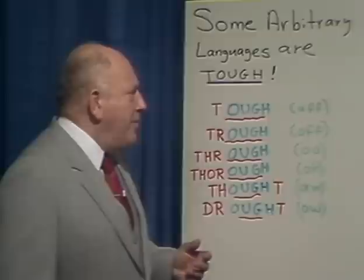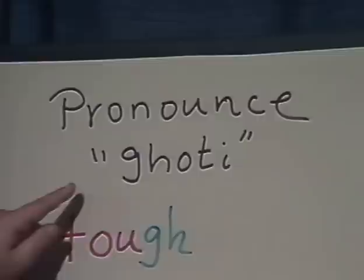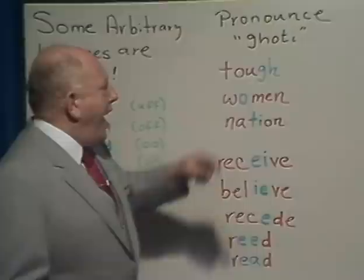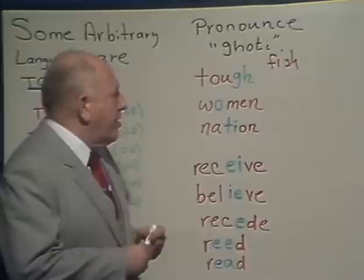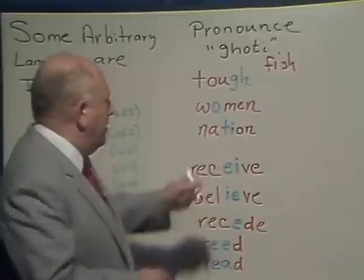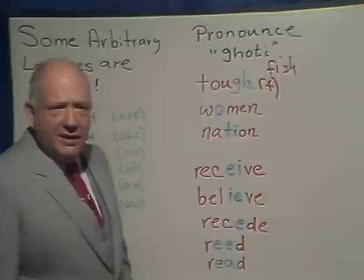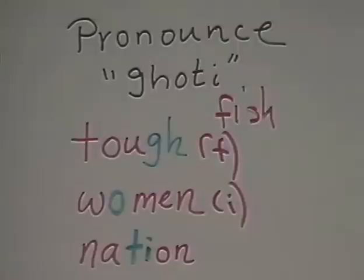I remember seeing a riddle in Reader's Digest: pronounce G-H-O-T-I. The answer was 'fish.' Take the G-H as in 'tough' — that's the F sound. Take the O as in 'women' — that's the I sound. Take the T-I as in 'nation' — and you get 'fish.' That illustrates the remarkable arbitrariness of English spelling.